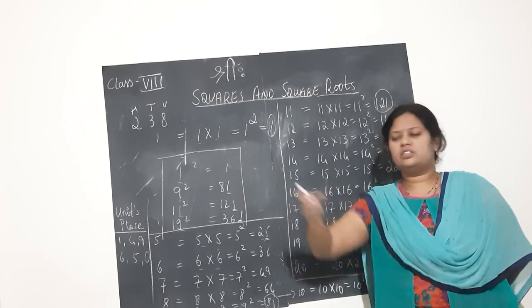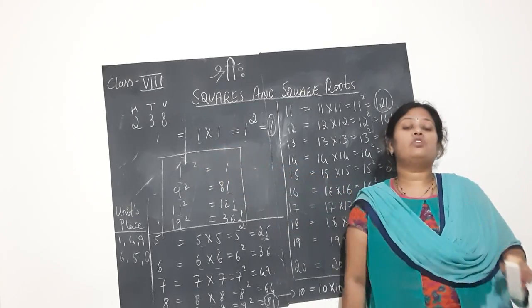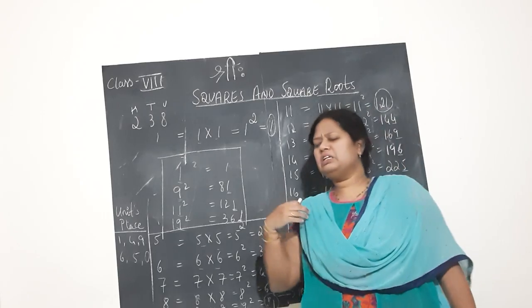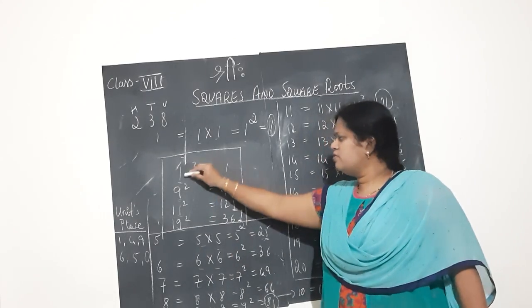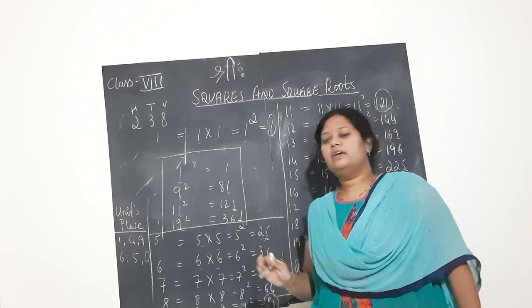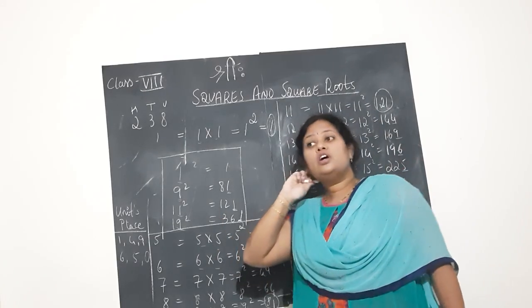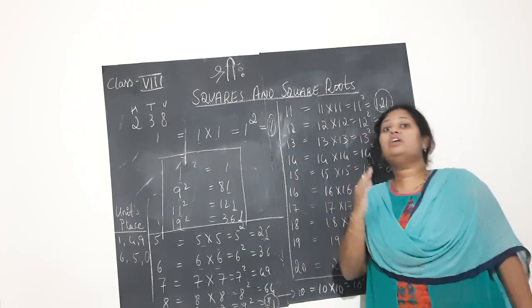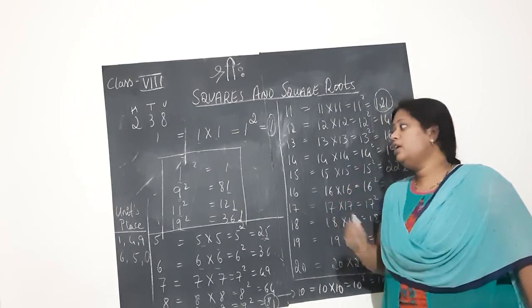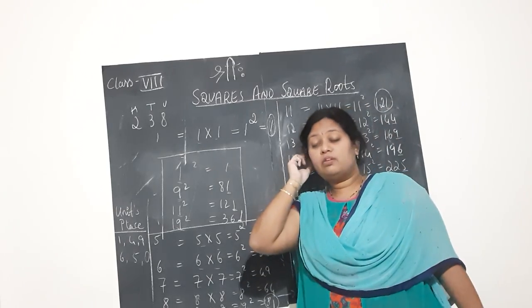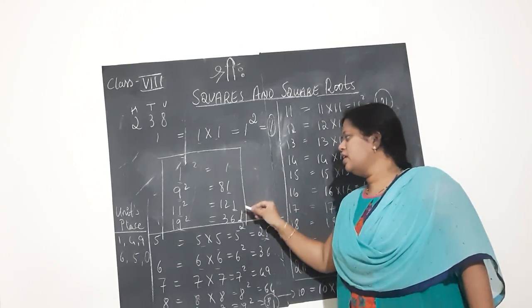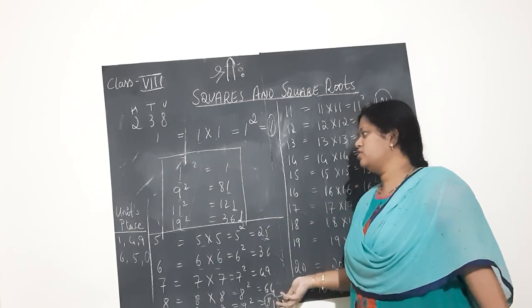This is also a useful hint. Suppose your friend gives you a big number as a puzzle — ending with 1 or 9. They ask you to find the square of that number, specifically what digit the square ends with. You can answer in a second, while they struggle with a calculator. You simply tell them it ends with 1.